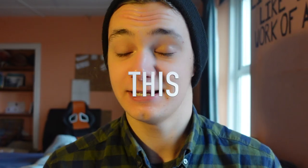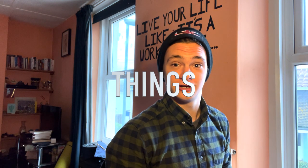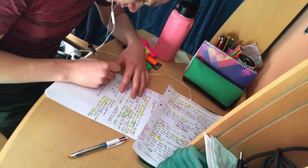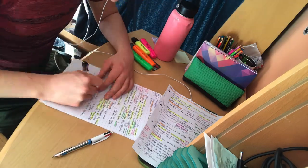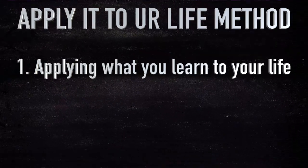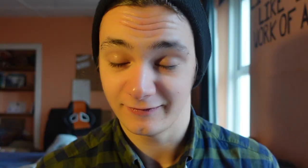My name's Joel. I'm an 18-year-old psychology student trying to help people have better lives, and this is my approach: using psychology to learn things fast. I'm calling it the Apply It to Your Life method, which consists of two parts. The first is applying what you learn to your life, and the second is applying learning to your life.